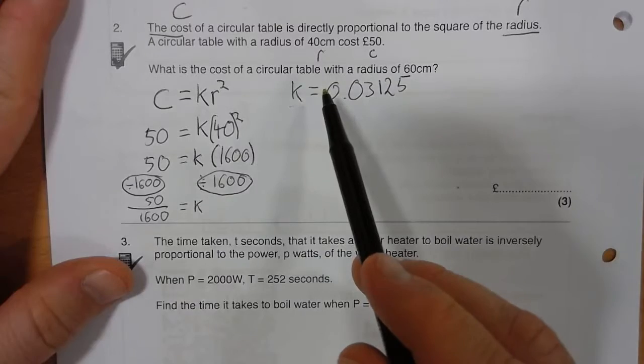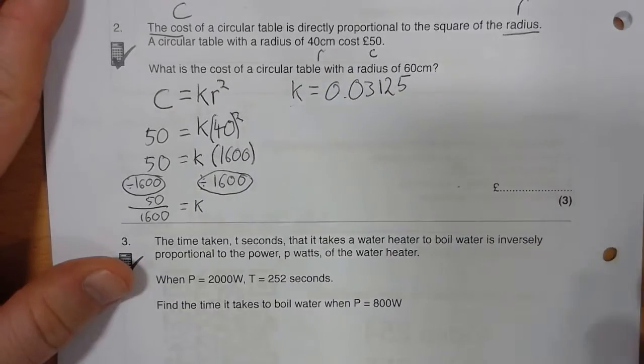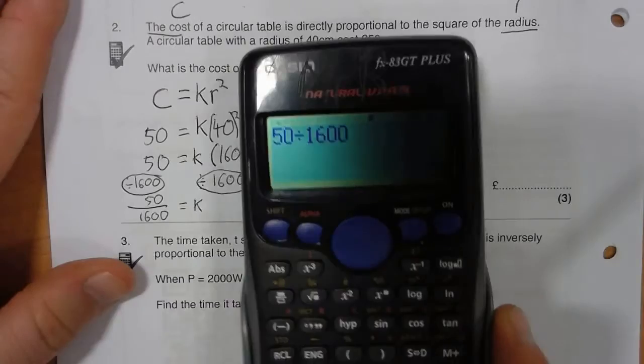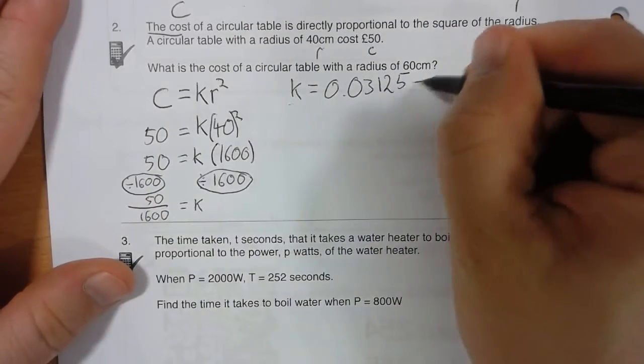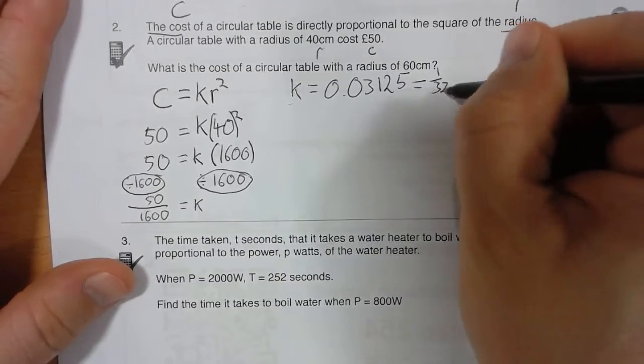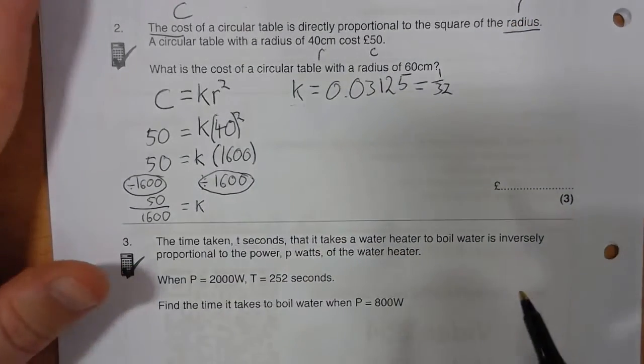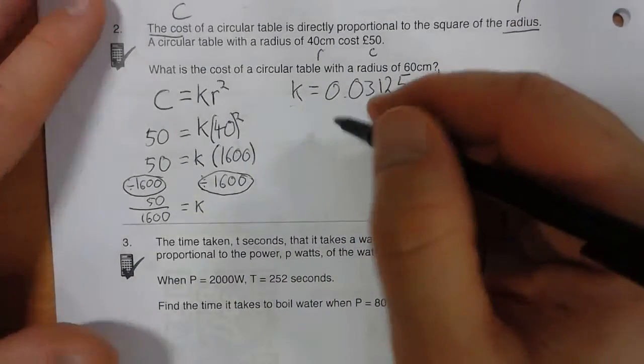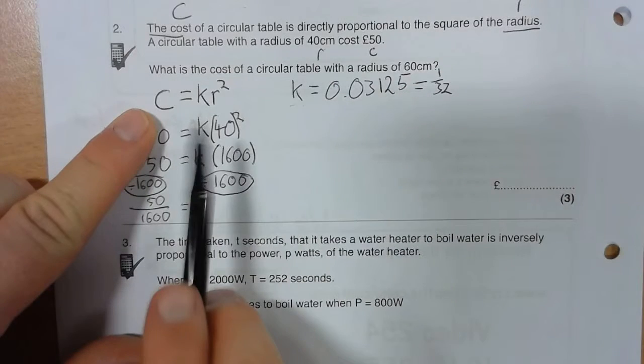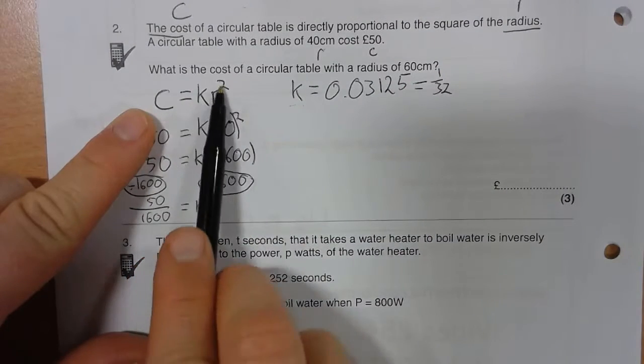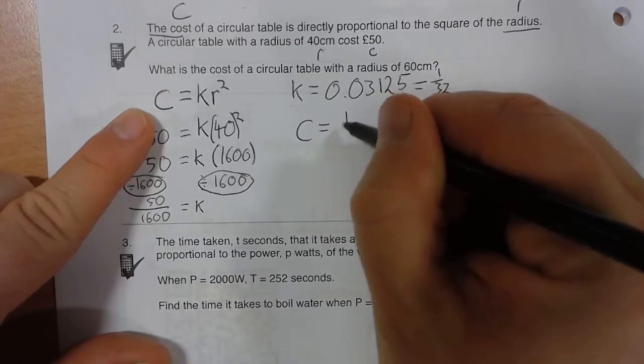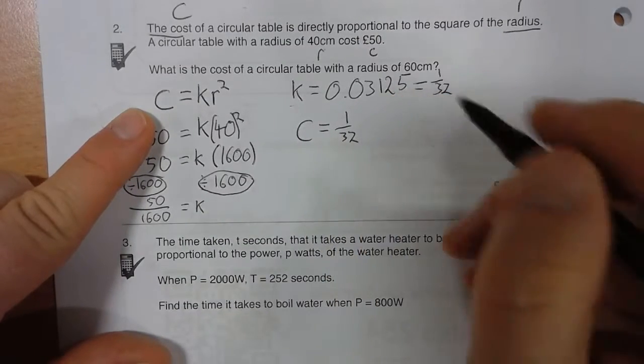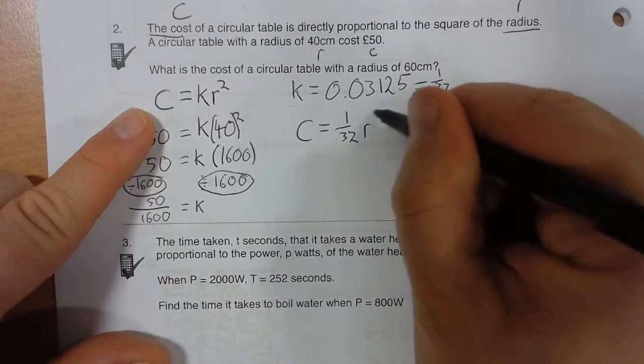I know what K is. So that is also 1 out of 32, which is just nicer to write that way. So I'm going to also say that's equal to 1 out of 32. Because I now need to put K value back into here. So C equals 1/32 R squared.